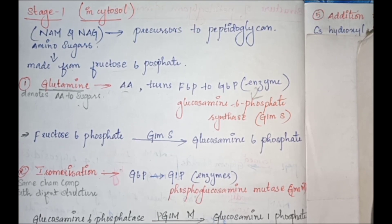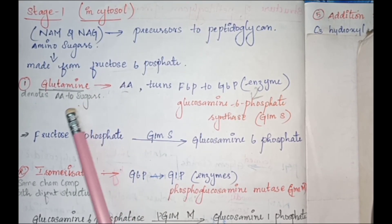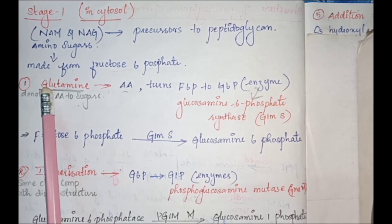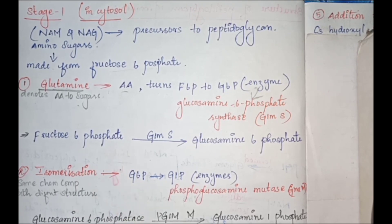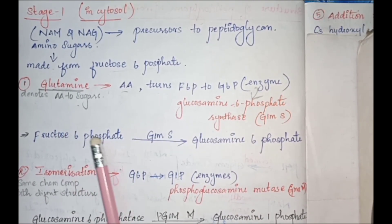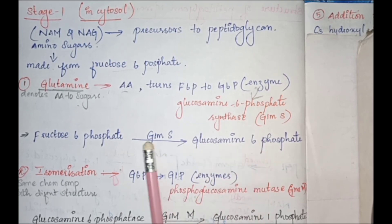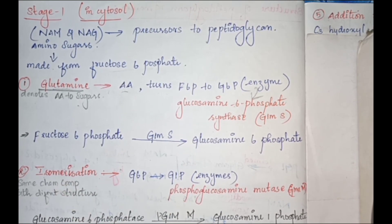In stage one, occurring in the cytosol, fructose-6-phosphate is needed to prepare the amino sugars. This fructose-6-phosphate is obtained from glutamine, an amino acid. Glutamine provides the sugar fructose-6-phosphate, which initiates the biosynthesis of the peptidoglycan layer. With the help of glucosamine-6-phosphate synthase enzyme, fructose-6-phosphate is converted to glucosamine-6-phosphate.